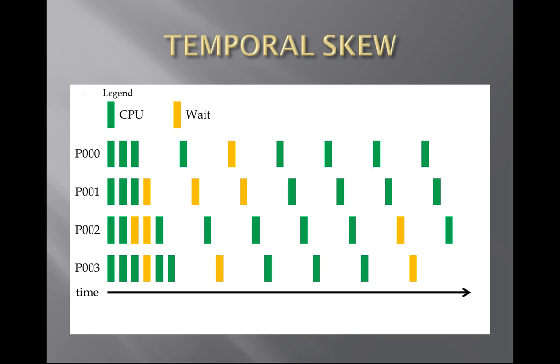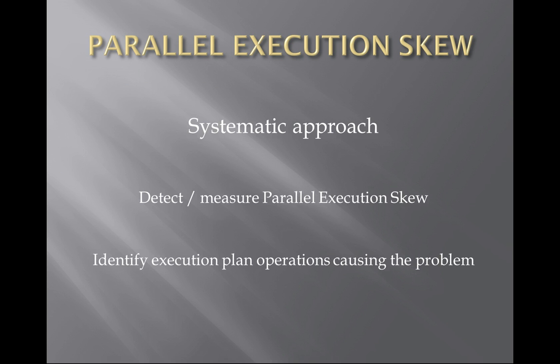Temporal skew is typically a side effect of the data distribution skew pattern shown in the previous slides. So what we have to do for a systematic approach to analyzing parallel execution is: first, detect whether our SQL execution is actually affected by parallel execution skew. The second question is, if we do have a parallel execution skew problem, how do we identify which operations in the execution plan are causing the problem and which are affected by it — so that we know what to do to address the problem at the execution plan level.